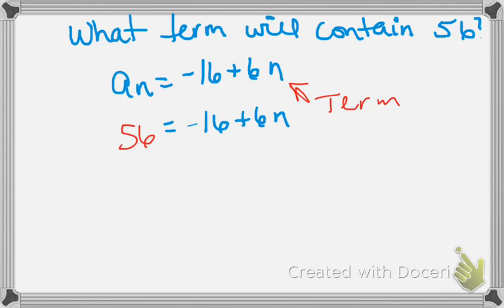Now we do PEMDAS backwards like we've done before. I want to get rid of my variable N. It's being multiplied by 6 and it's being subtracted by 16. It's not being added by 16. Remember, the sign in front of the number always follows it. So this is really a negative 16. So I'm going to add 16 to both sides.